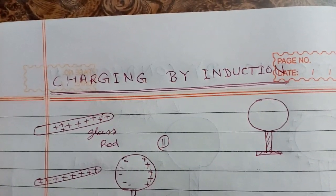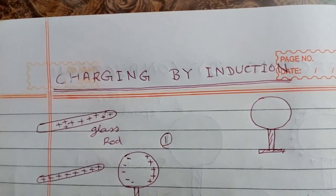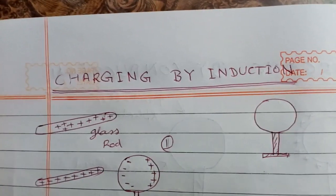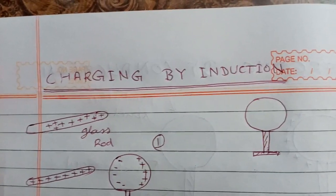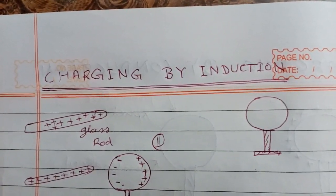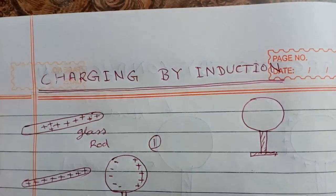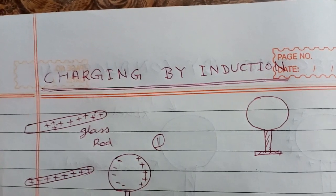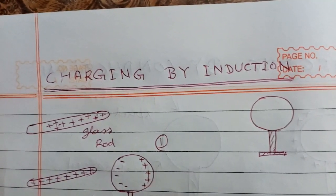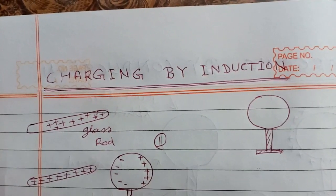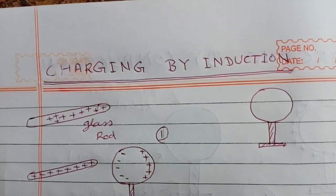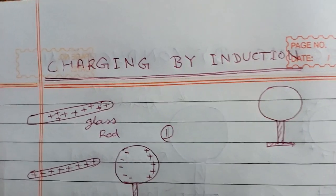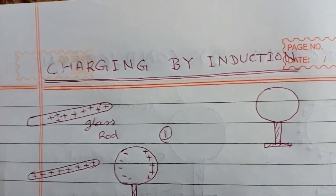Free electrons in the sphere move towards that surface where the glass rod is located. So at the near end of the glass rod, negative charge is accumulated on the surface of the metallic sphere. Since electrons have been transferred from the right-hand side surface to the left-hand side surface, the left-hand side surface becomes negatively charged and the right-hand side surface becomes positively charged. Here protons are not moving — only free electrons are moving.